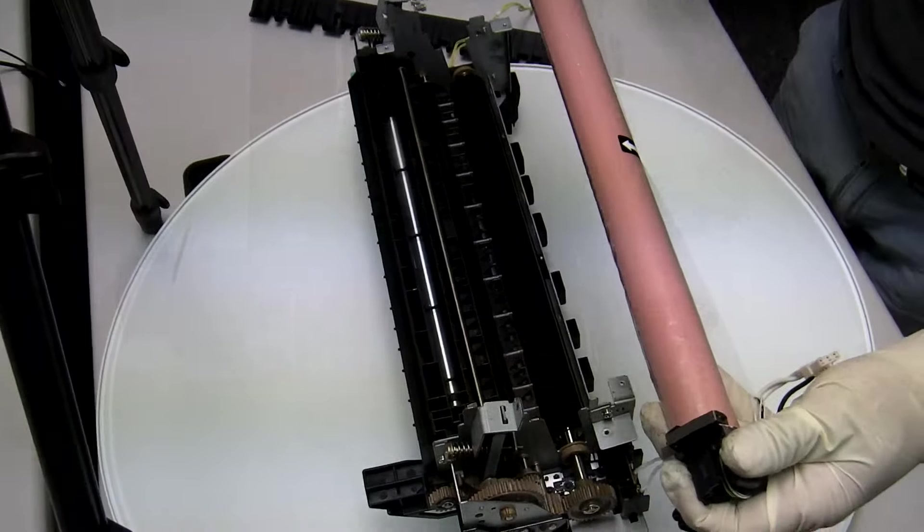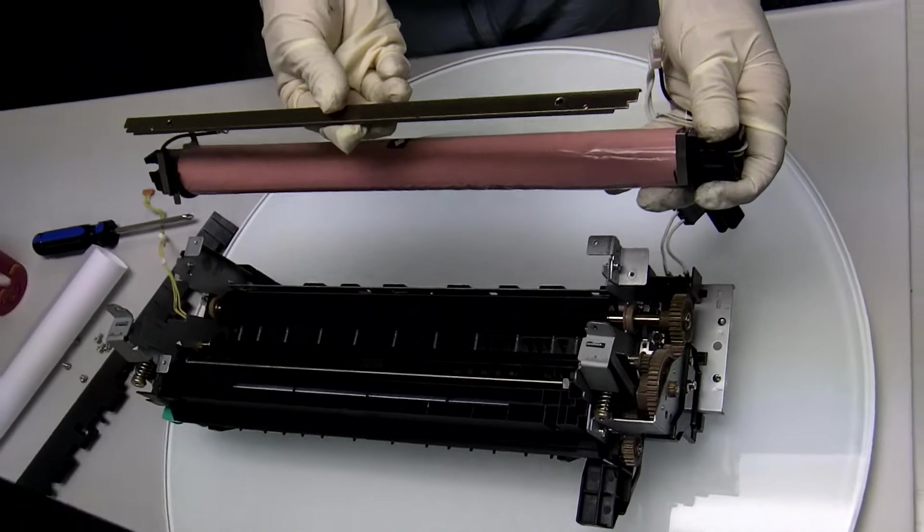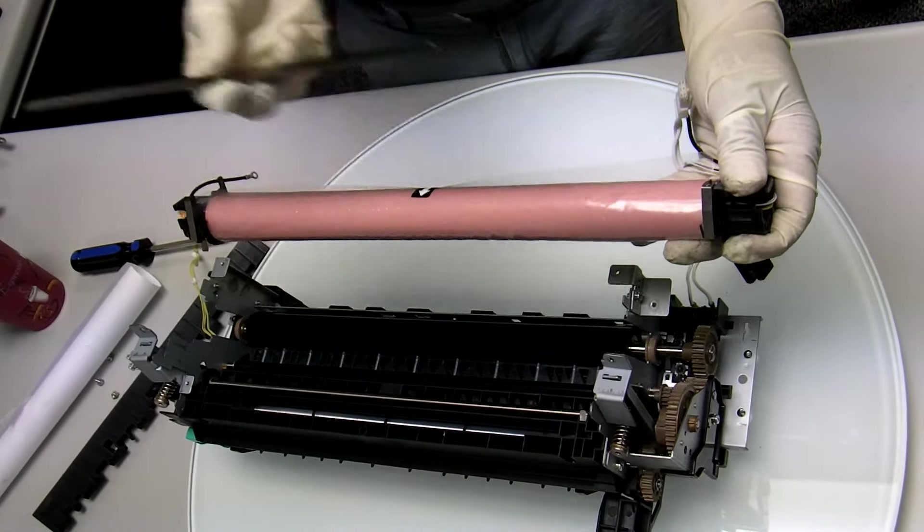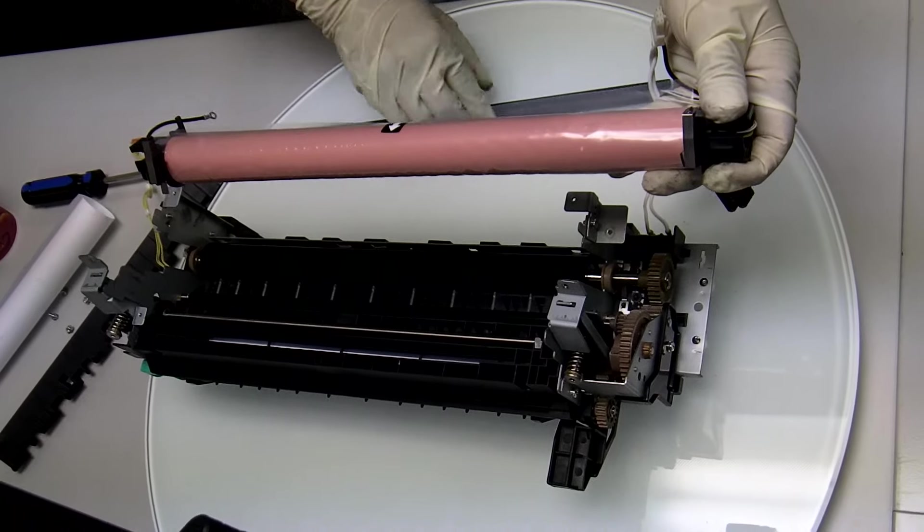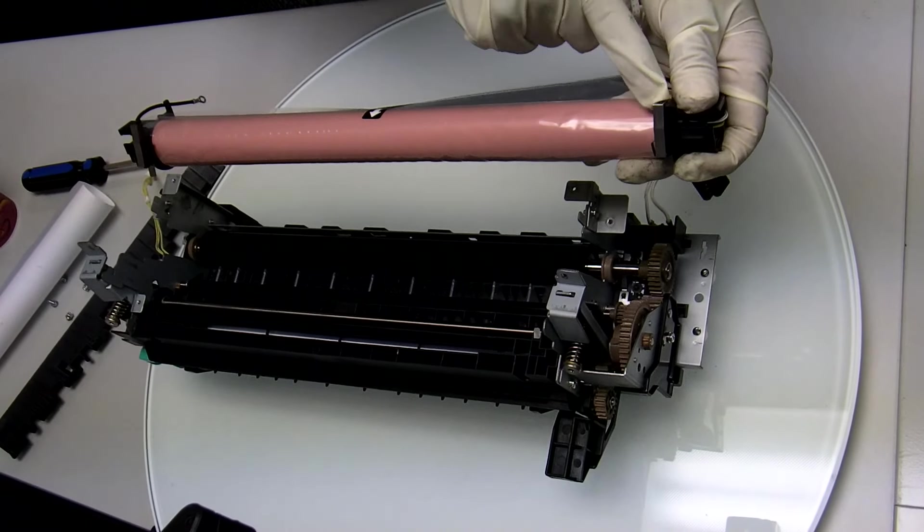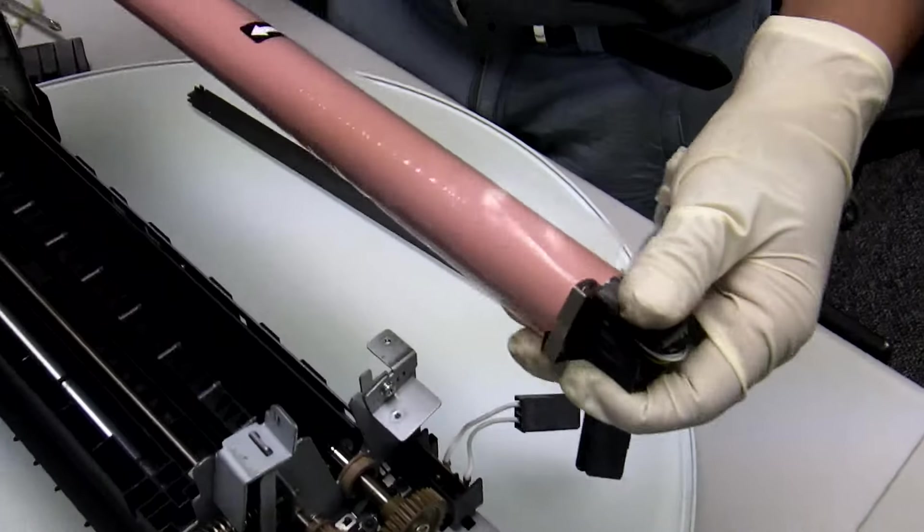Now time to put the film assembly in place. Now insert the guide into the film assembly. Only the aftermarket brings the guide. The OEM will not bring it so you will have to use your old one.